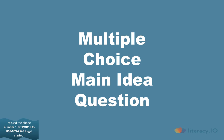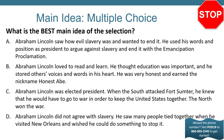It's time for us to answer a multiple choice main idea question. When we look at these questions, we have to ask ourselves which one contains the cause, the problem, and the solution. What is the best main idea of this selection? A: Abraham Lincoln saw how evil slavery was and wanted to end it. He used his words and position as president to argue against slavery and end it with the Emancipation Proclamation. B: Abraham Lincoln loved to read and learn. He thought education was important and was very honest, earning the nickname Honest Abe. C: Abraham Lincoln was elected president; when the South attacked Fort Sumter, he went to war to keep the United States together. The North won the war. D: Abraham Lincoln did not agree with slavery. He saw many people tied together when he visited New Orleans and wished he could do something to stop it. Pause your video and text in your answer now.